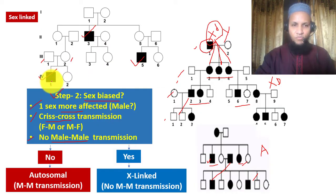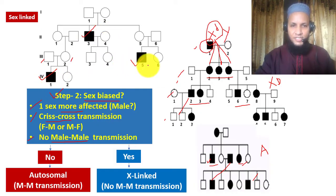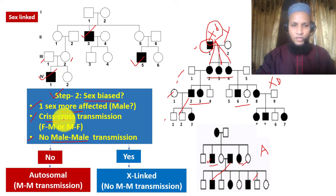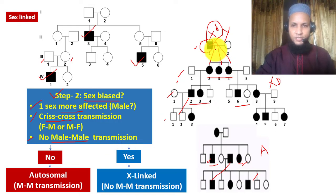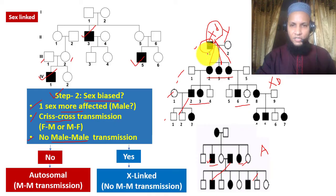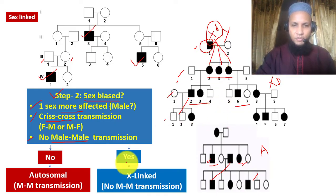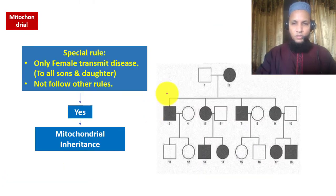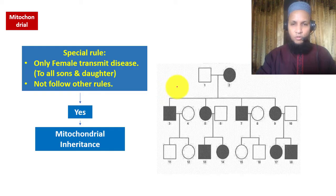To summarize sex biasness: if only males are affected, it is sex-biased. If there is crisscross transmission — meaning all daughters of the affected father are affected — it will also be X-linked. If there is male-to-male transmission, it will be autosomal. Sometimes pedigrees do not follow the above rules, so we need special rules.